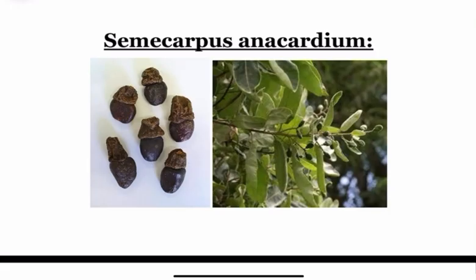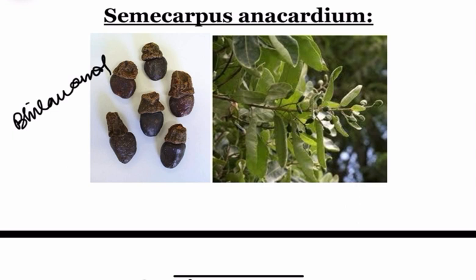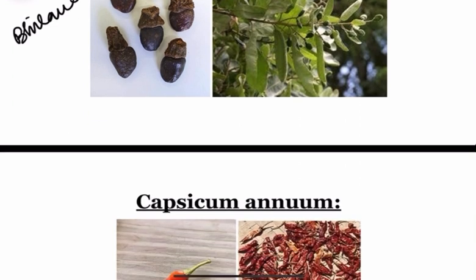Next is Semicarpus Anacardium. The active principle is Bilavanol. It is also called as Bilwa. The seeds are called as Marking Nuts and they are used to produce artificial bruises.